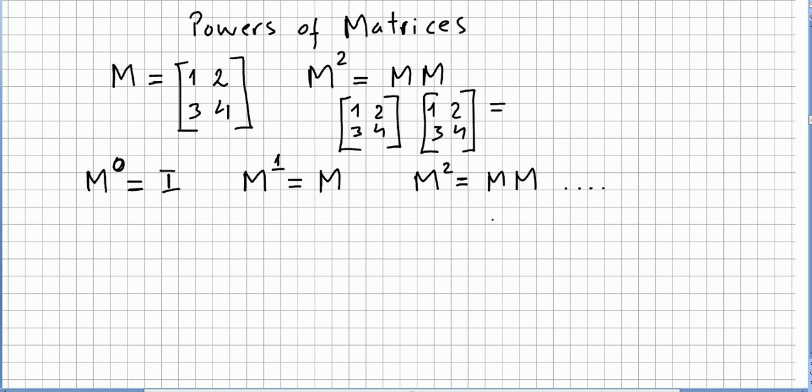M squared is M times M. So you keep on and you will get to the point where M to the power of R plus 1 is going to be the same as M times M to the power of R. And you can define this recursively.